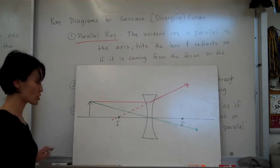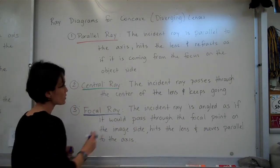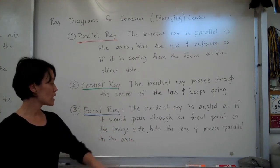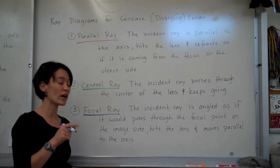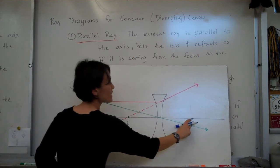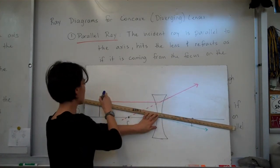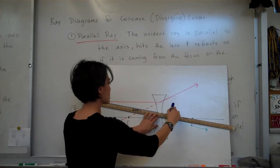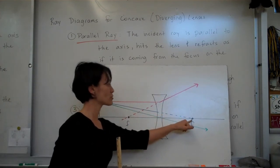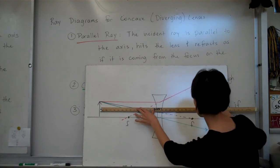The third ray — the focal ray — is a bit tricky. The incident ray is angled as if it would pass to the focal point on the image side, hits the lens, and then moves parallel to the axis. You have to project where it's going to go: line up the top of your object to that focal point on the image side. Draw a dashed line to show the projected angle. When it hits the lens, instead of continuing toward that focal point, it goes parallel.